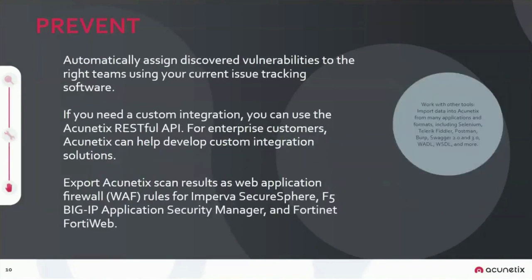In the prevent stage, once the fix is in, it prevents the vulnerability from being exploited to gain access to any system. Acunetix automatically assigns discovered vulnerabilities to the respective team using your current issue tracking software. The team creates the fix, and vulnerabilities marked as fixed but still exploitable will be marked as rediscovered. We offer out-of-the-box integration with Jenkins, Jira, GitHub, GitLab, Bugzilla, Mantis, and Azure DevOps. For other integrations, we can provide our API.